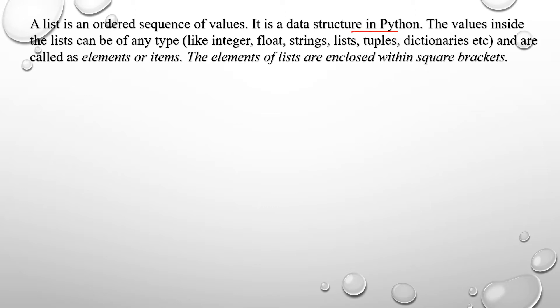The values inside a list can be of any type — for example, integers, floats, strings, lists, tuples, dictionaries, etc. — and are called elements or items. The elements of the list are enclosed within square brackets.